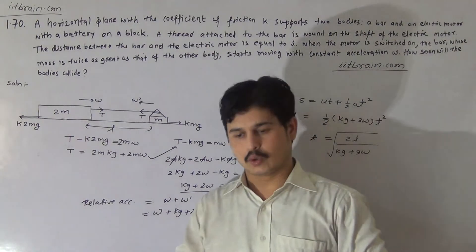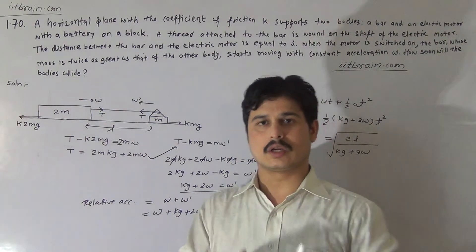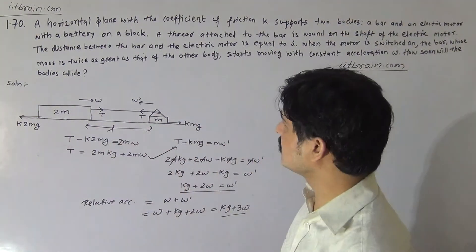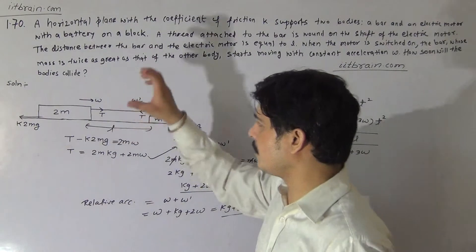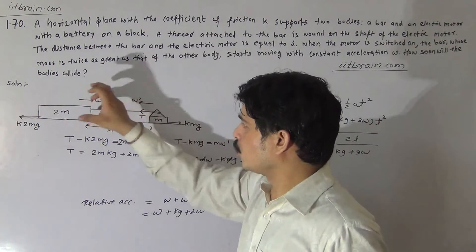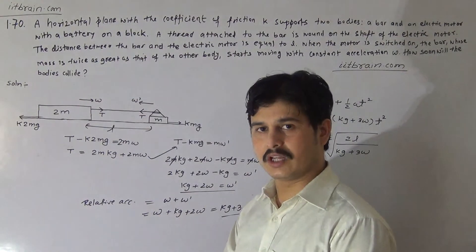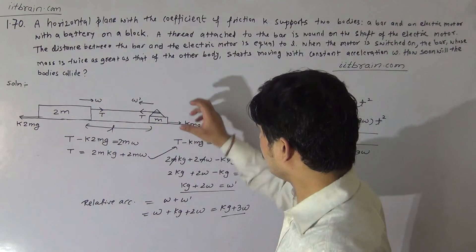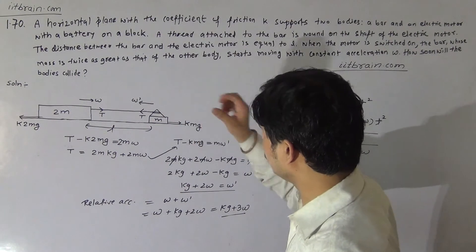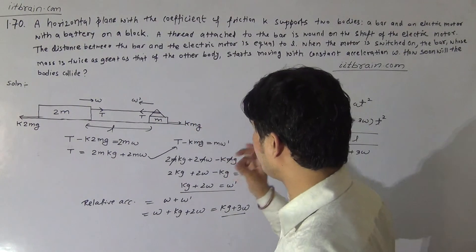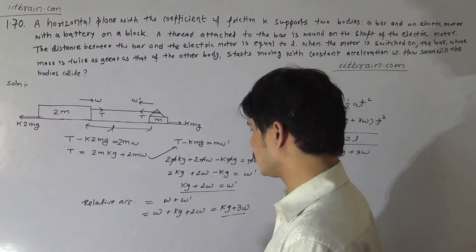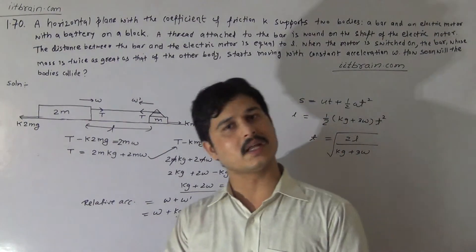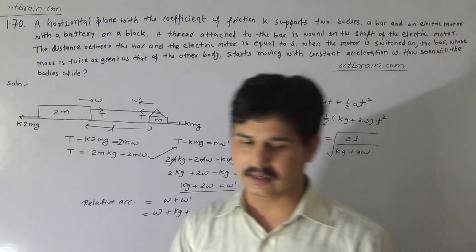So after this much time, the two bodies will collide. To summarize the solution: first, write the equation of motion for the 2m bar; then calculate the equation for the motor and block combined; calculate relative acceleration; then calculate the time. Thank you.